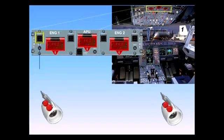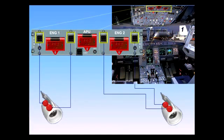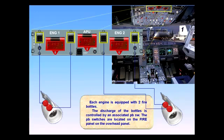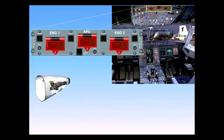Each engine is equipped with two fire bottles. The discharge of the bottles is controlled by an associated push-button switch. The push-button switches are located on the fire panel on the overhead panel. For the APU there is just one fire extinguisher bottle and only one discharge button.